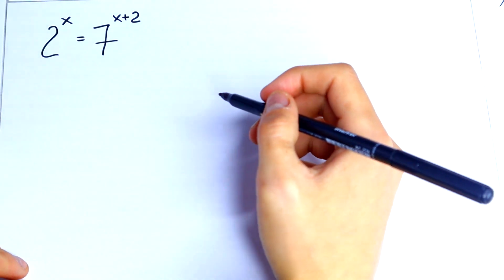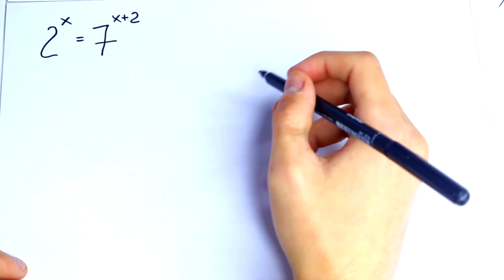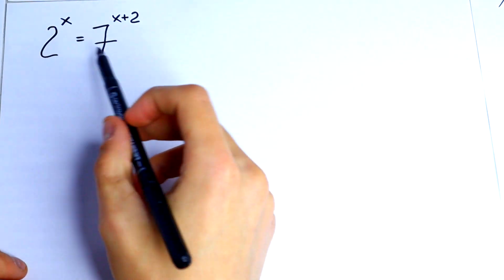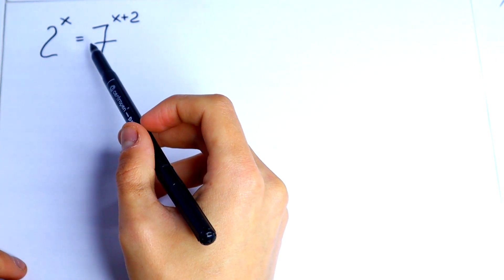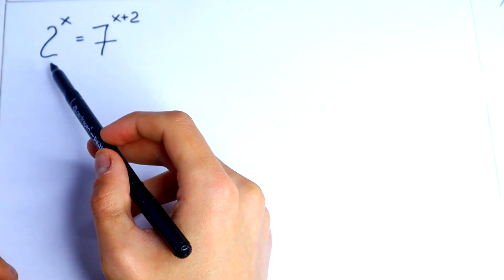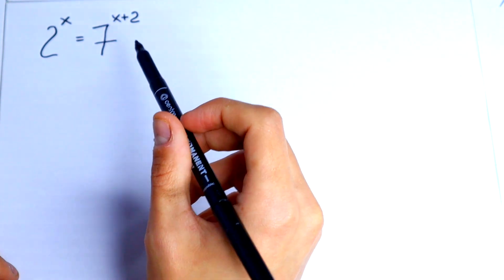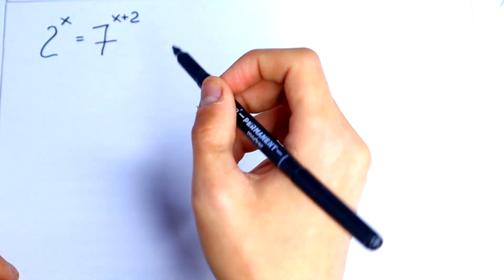Hello everyone and welcome to MathMood. In this video we are going to solve this interesting exponential equation: 2 to the power x equal to 7 to the power x plus 2. Here we have different bases. So let's do this.